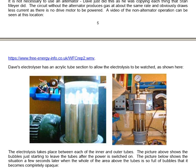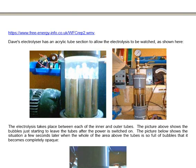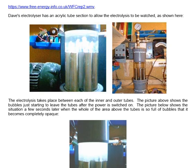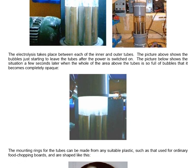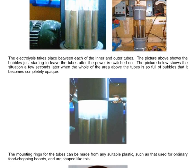This is Dave's cell and this is a close-up of the cells just after the power has been switched on. The electrolysis takes place between each of the inner and outer tubes. The picture above shows the bubbles just starting to leave the tubes after the power is switched on. The picture below shows the situation a few seconds later when the whole of the area above the tubes is so full of bubbles that it becomes completely opaque.